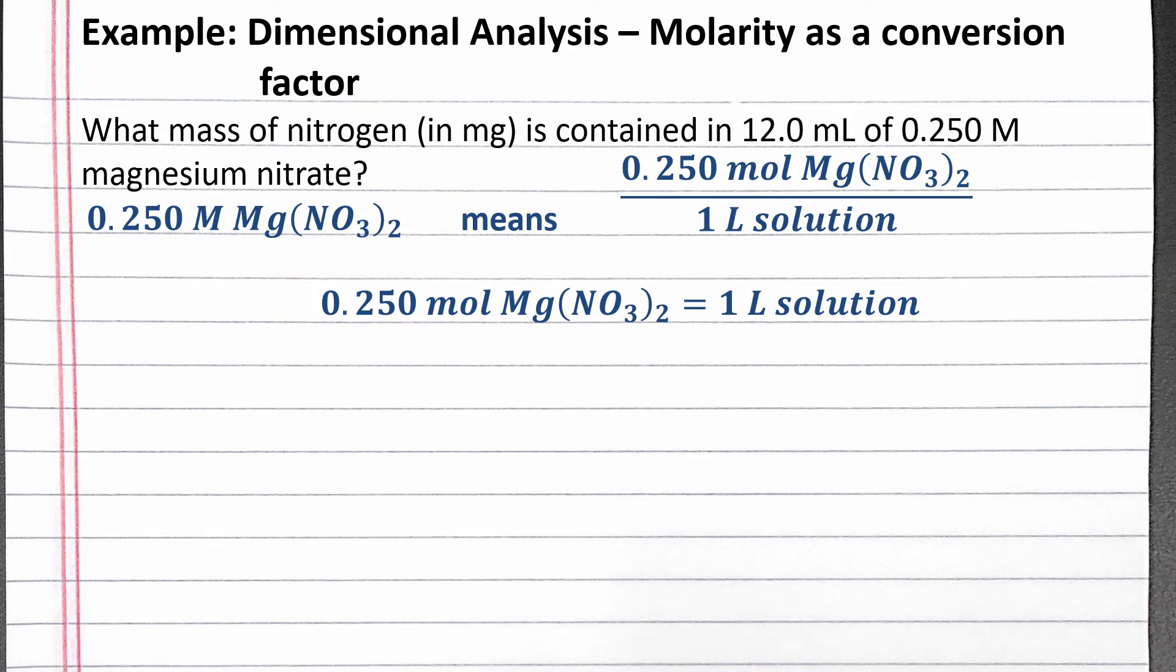The only other number we're given in the problem is our volume of solution, so we'll start our dimensional analysis with 12 milliliters of magnesium nitrate solution.